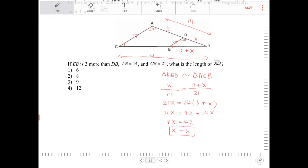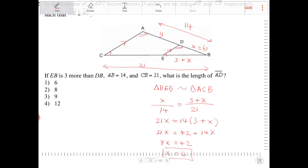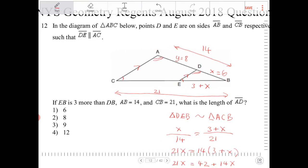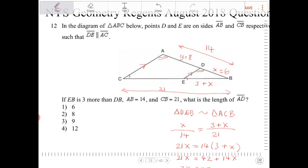Since x is equal to 6, and the overall length of AB is 14, y therefore must equal 8. So AD must equal 8, and that would be option 2.